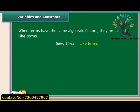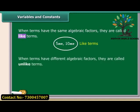When terms have the same algebraic factors, they are called like terms. And when terms have different algebraic factors, they are called unlike terms.